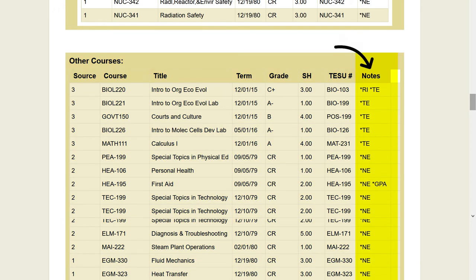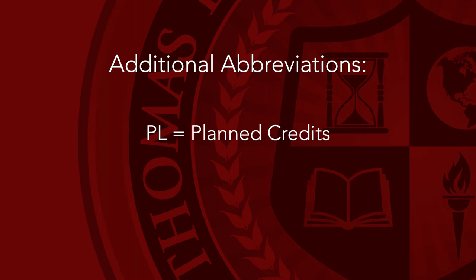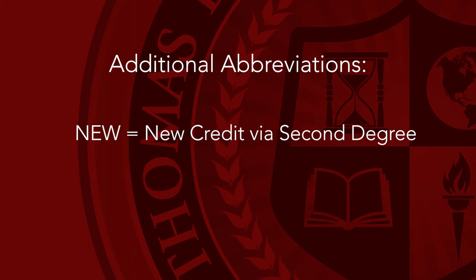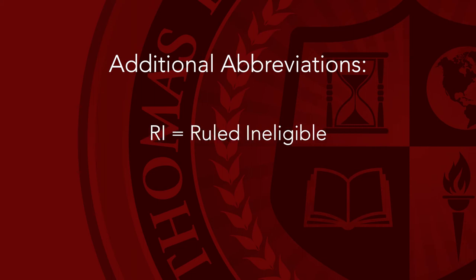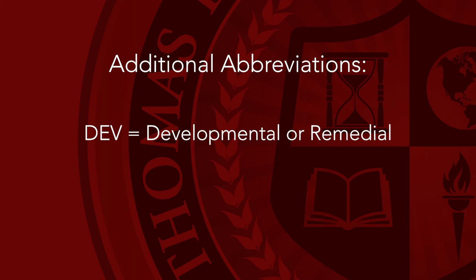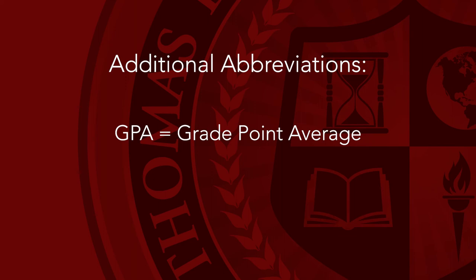Under the notes section, you may see some of the following additional abbreviations. PL stands for Planned Credits. PR stands for Pre-Registered and indicates courses that have not yet started. NEW stands for New Credit and identifies credits earned on a second degree pursuit with Thomas Edison State University. RI stands for ruled ineligible for this program and cannot be applied to the degree. DUP stands for Duplicates Other Credit and cannot be applied to the degree. DEV stands for Developmental or Remedial and cannot be applied to the degree. GPA stands for Grade Point Average and indicates that a course could not be used in the degree because it brings the overall GPA below the minimum requirement of 2.0.